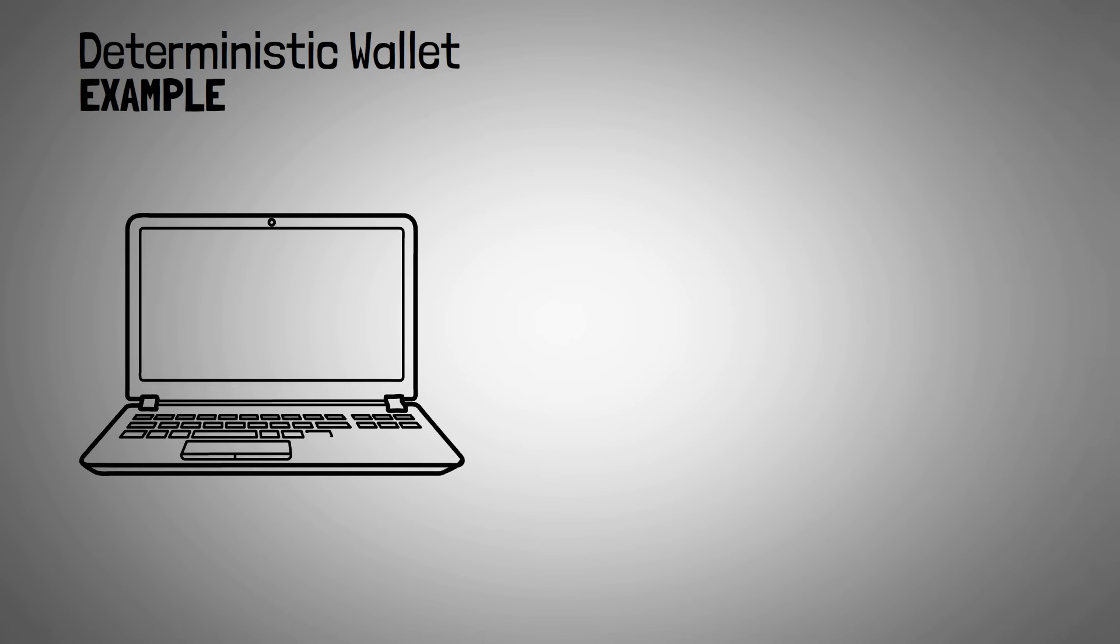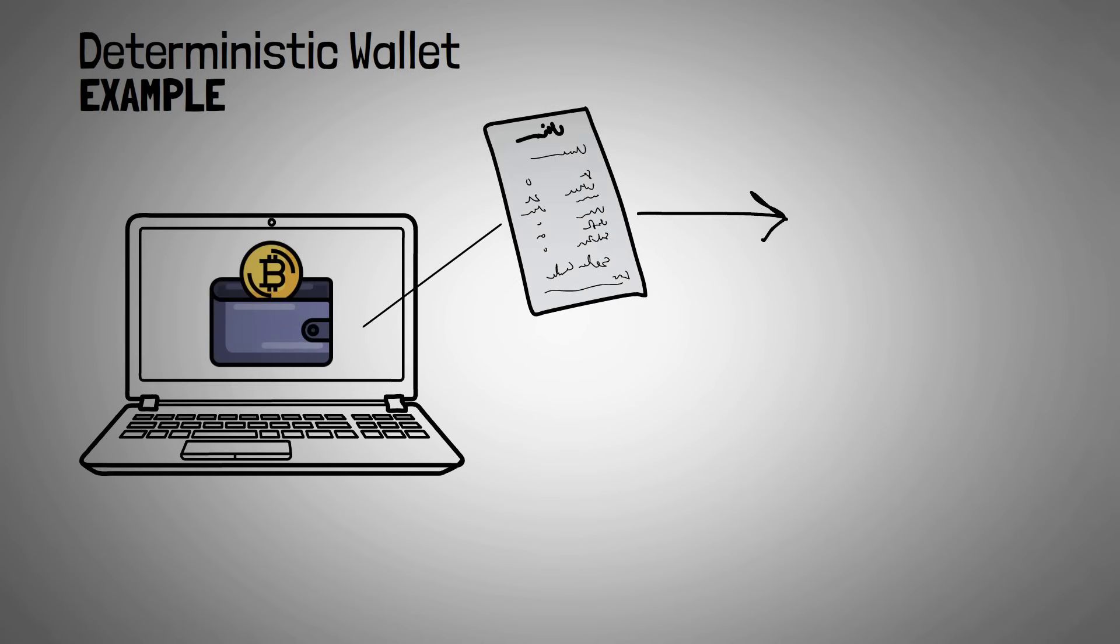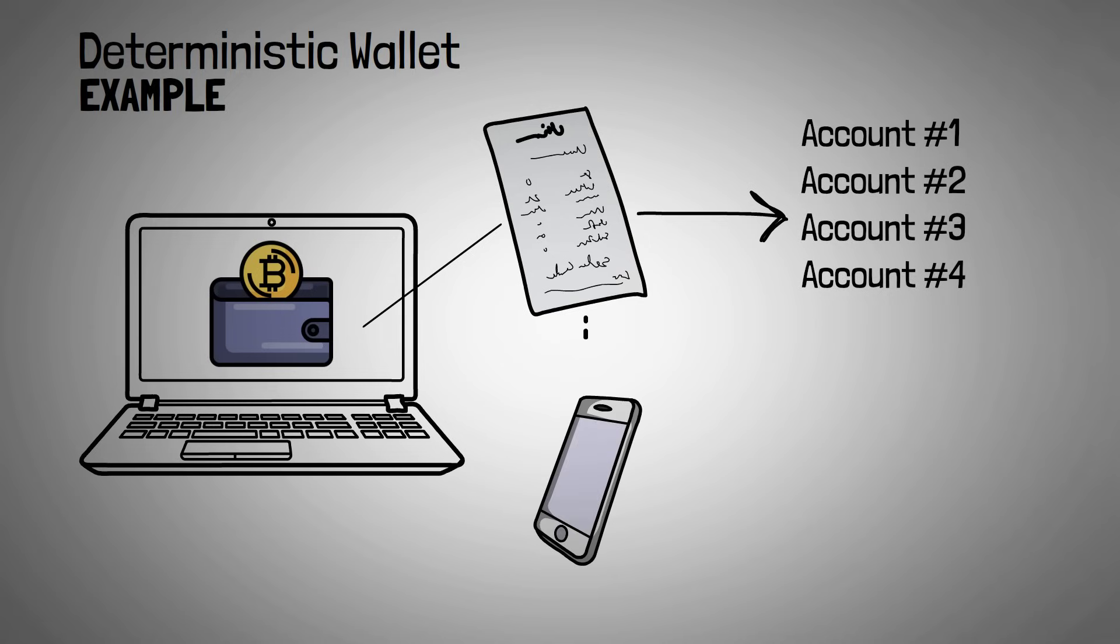For example, you can have a wallet with a seed phrase and it'll create account one, and then if you want another account, it'll create account two, and then account three, account four, and so on. Then, if you move that seed phrase to another software, say maybe an app on your phone, that same seed phrase, using the same BIP39 standard, will also create the same account one, account two, account three, and account four, in the exact same order.